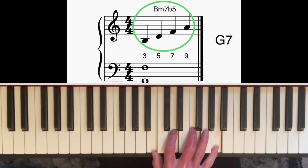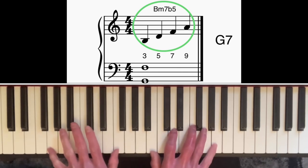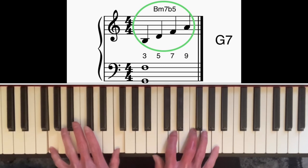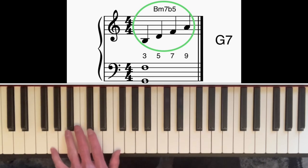You could think of that as chord seven in the key of C major—it's a B half diminished, or B minor seven with a flattened fifth. Or you can think of it in terms of what those notes are in the G7 chord: that is, third, fifth, seventh, and ninth.